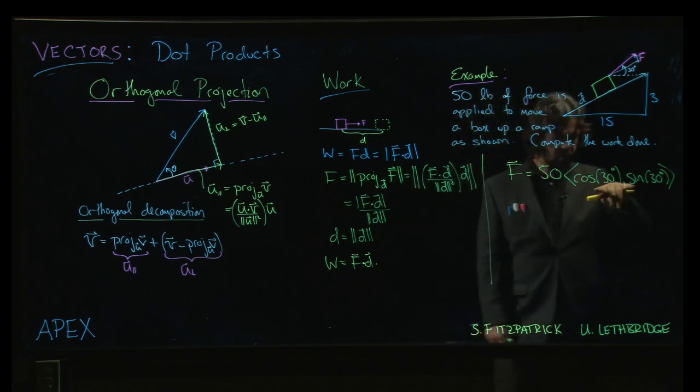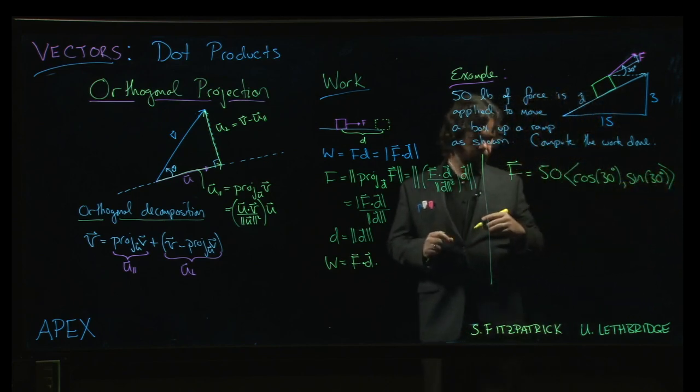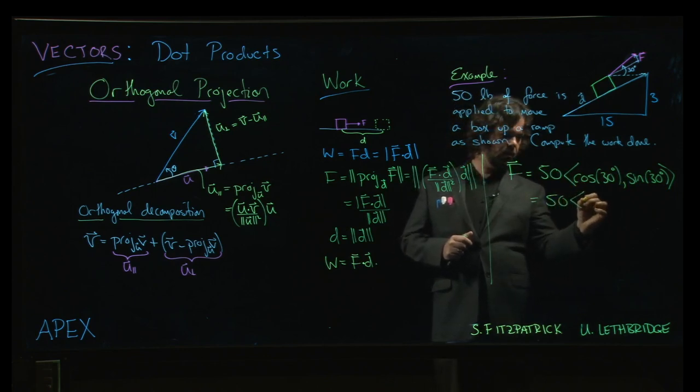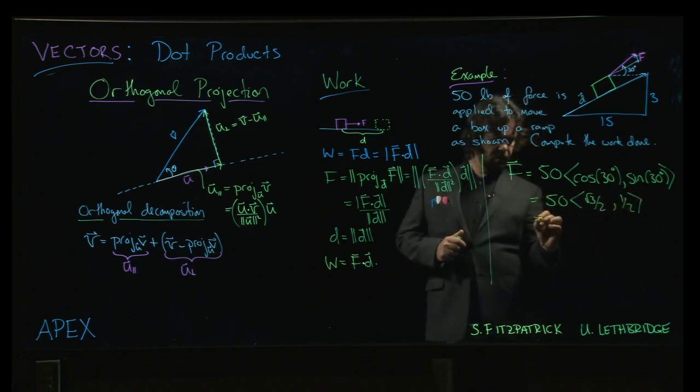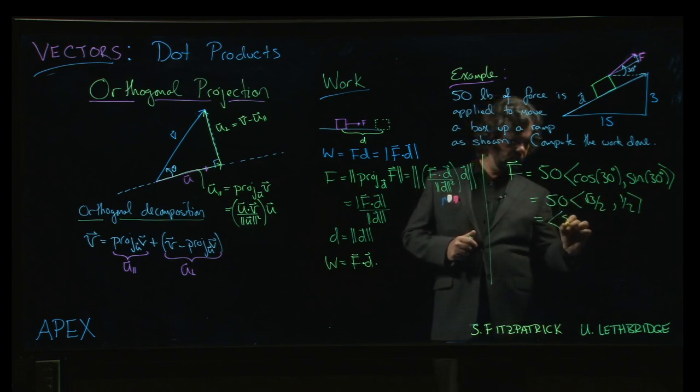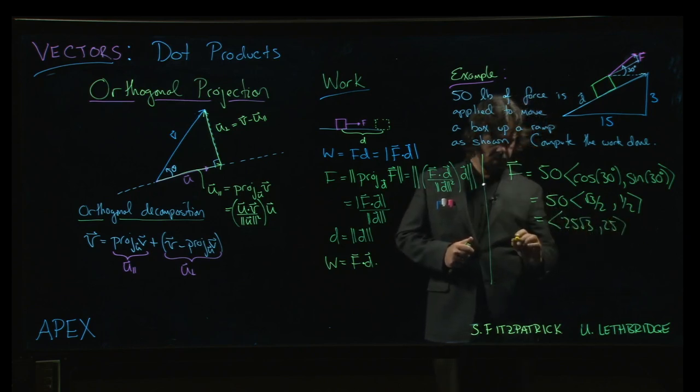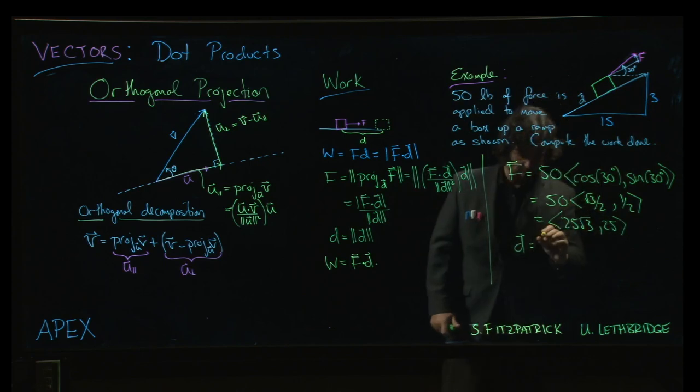We know that this vector here will give me a unit vector that makes that angle of 30 degrees with respect to the horizontal. And so the force is going to be 50 times root 3 over 2 and 1 half. So we can write that as 25 root 3 and 25. And the displacement vector, we go over 15 and we go up 3. So that's just 15, 3.